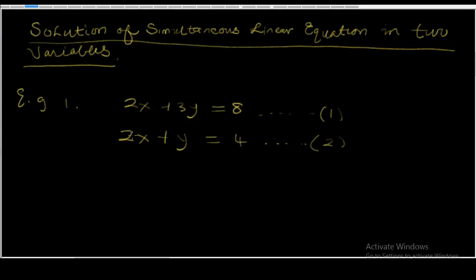In the case of this equation, the coefficients are already equal. Because in equation 1 we have 2x, and in equation 2 we also have 2x. So the coefficients of x in the two equations are the same, and we don't have to bother ourselves. The next thing we're going to do is subtract equation 2 from equation 1.